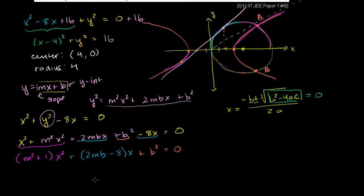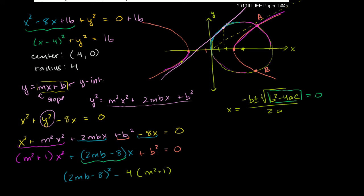So what's b squared minus 4ac here? This is our b in terms of the quadratic formula — don't confuse that with the y-intercept b. We have 2mb minus 8 squared, minus 4 times a, which is m squared plus 1, times c, which is b squared, all equal to 0. Expanding: 4m squared b squared minus 32mb plus 64 minus 4m squared b squared minus 4b squared equals 0.